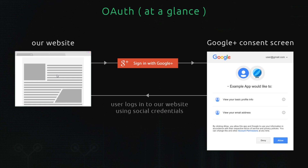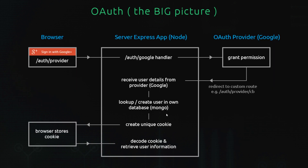We can take that information and store it in our own database to make our own record for that user. The reason we might want to do that is so we can expand on the data we have on that user — for example, each user on our website might have points associated with them. So we add them to our database; it's nothing to do with Google, just our user. That's a really simplified version of what's going on.